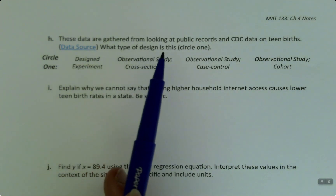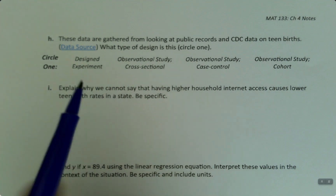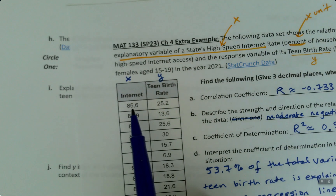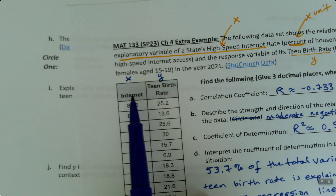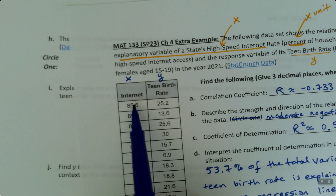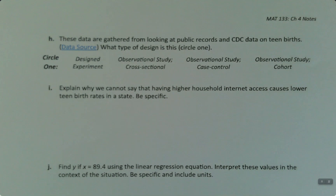So what type of design is this? First off, it's not a designed experiment. A designed experiment would require us, as the researchers, to have some kind of magical power to be able to say this state gets this kind of high-speed internet, and this state gets this kind of high-speed internet, which is obviously impossible. So this couldn't be a designed experiment, which means it's an observational study.